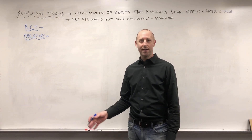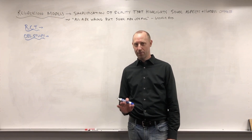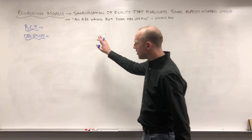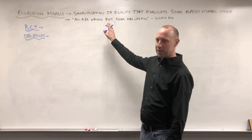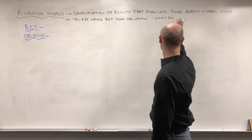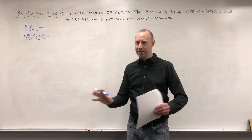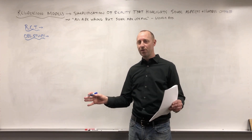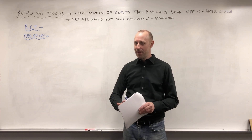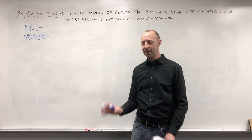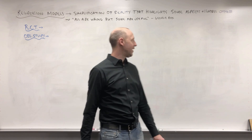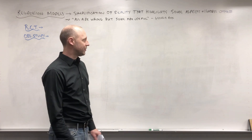I want to close off by getting back to the different regression models we're going to talk about throughout the course. Regression models are a simplification of reality that highlights some aspects while ignoring others. It's important to remember that what we do is try to take a lot of complex data and boil it down to a few simple things. We end up oversimplifying the data, but there's a good reason for that — it allows us to really hone in and look at certain things.